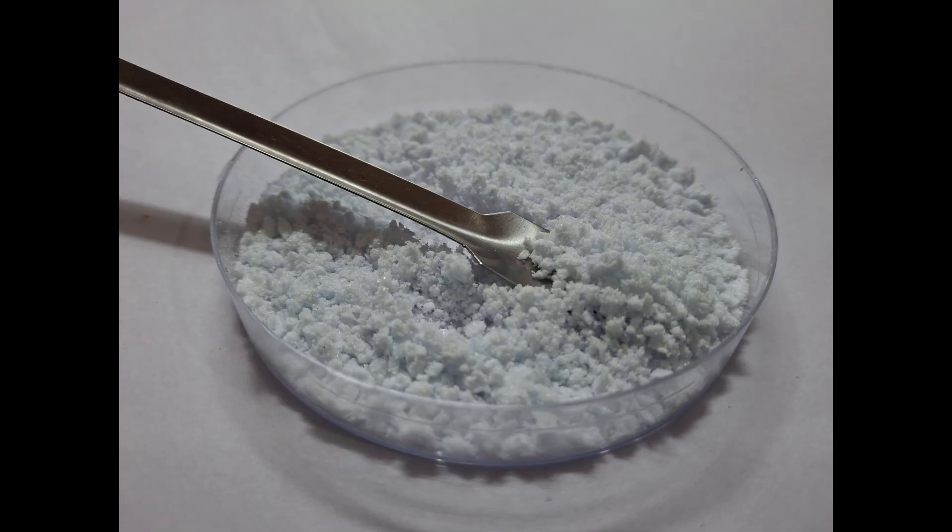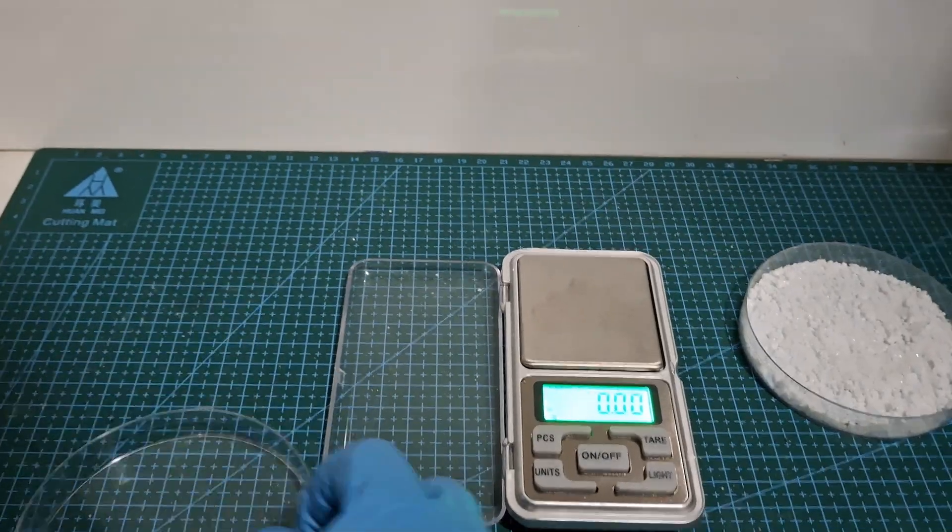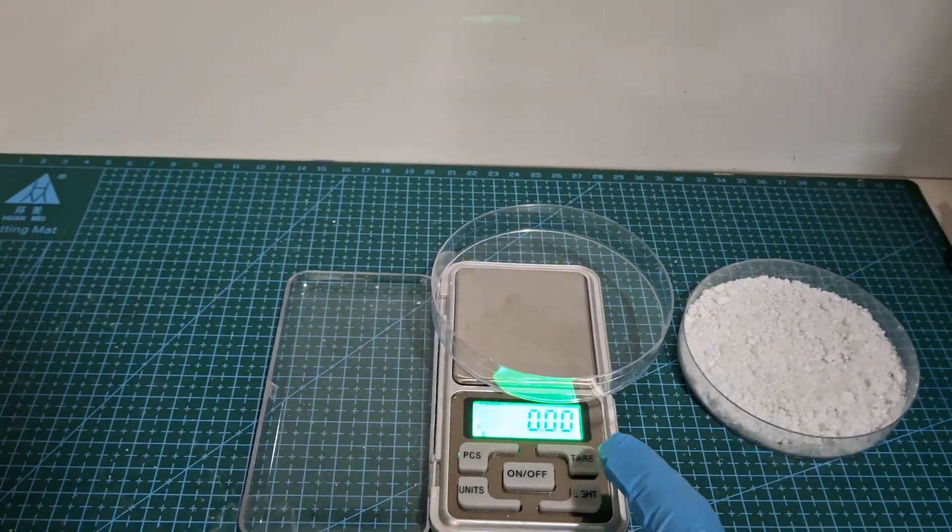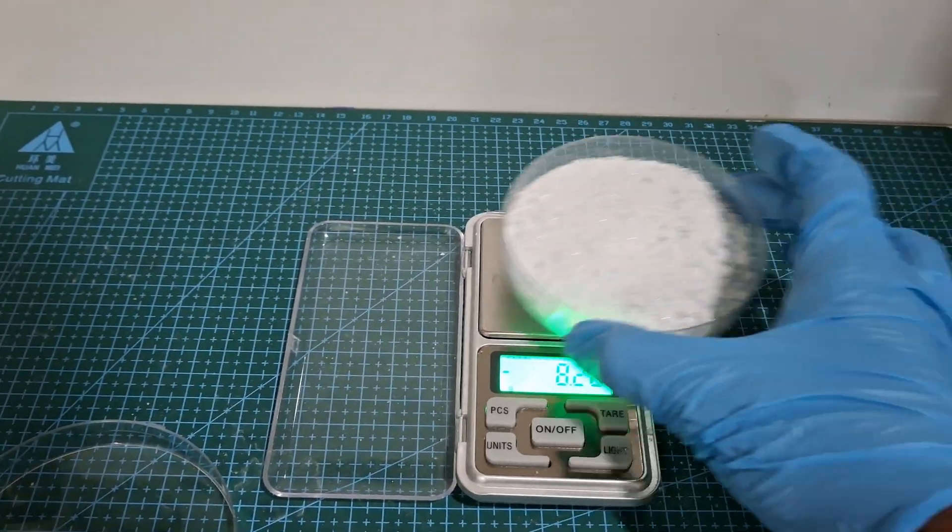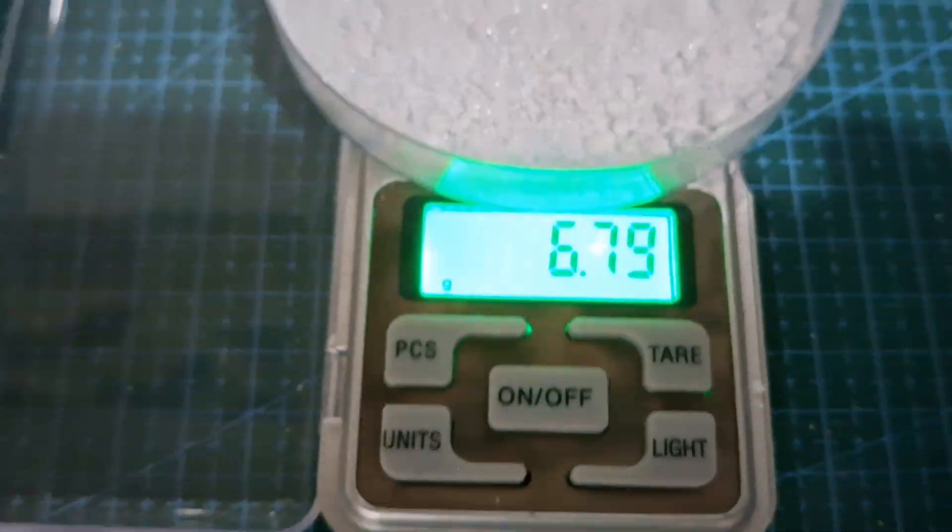Here's how the crystals look after they're dried. As you can see, they've lost their color. The final yield seems to be 6.79 grams of glutamic acid.